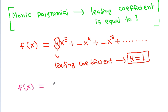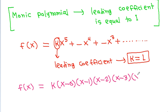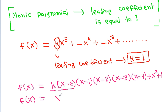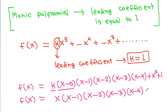So f(x) is equal to x(x−1)(x−2)(x−3)(x−4) + x² + 1, with k = 1.